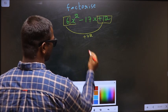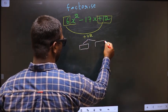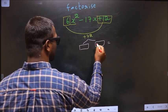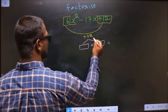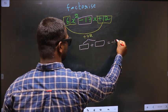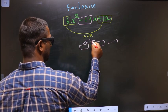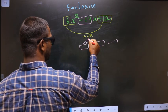Now you should look out for two numbers such that when you add these two numbers you should get the middle coefficient, that is -17, and also when you multiply you should get +72.